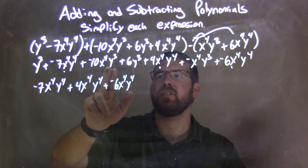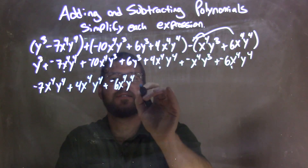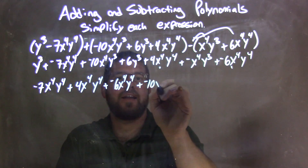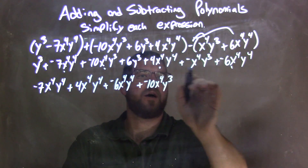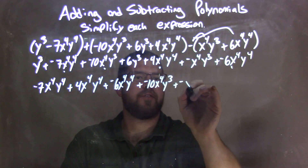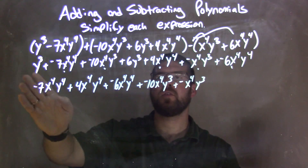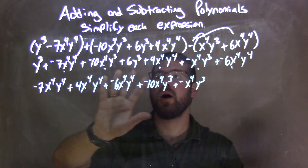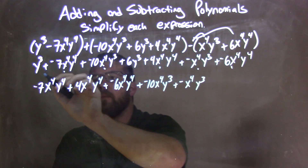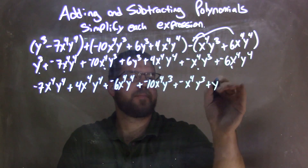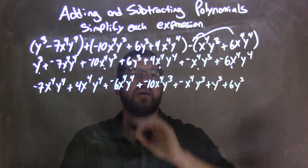Next highest powers I see is x to the fourth y to the third. The first one I see is that negative 10x to the fourth y to the third. Next, I see another one: plus a negative x to the fourth y to the third. Then from there, I don't see anything else with combinations of x and y. So we just have y to the third and y to the third. So let's bring them down — a y to the third here, and then 6y to the third.